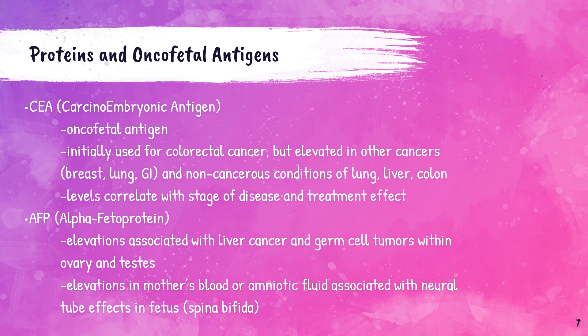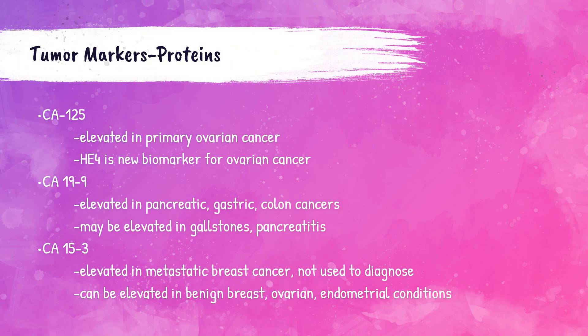Alpha-fetoprotein, or AFP, can be elevated with cancer of the liver and germ cell tumors in the ovary and the testes. In utero, elevations of AFP in the mother's blood or amniotic fluid are associated with spina bifida, a neural tube defect affecting the spine's development. Three additional protein tumor markers are CA125, CA19-9, and CA15-3. CA125 elevations are primarily associated with ovarian cancer; HE4 is a newer biomarker for ovarian cancer that alongside CA125 helps aid in its diagnosis. CA19-9 can be elevated in pancreatic, gastric, and colon cancers, but also in non-cancerous conditions like gallstones and pancreatitis. CA15-3 can be elevated in metastatic breast cancer, but also in benign non-cancerous breast, ovarian, and endometrial conditions.